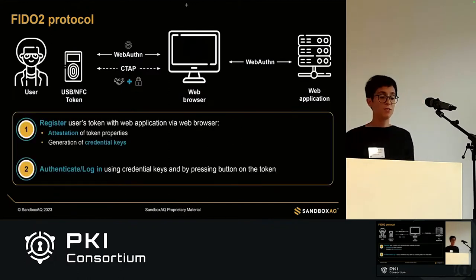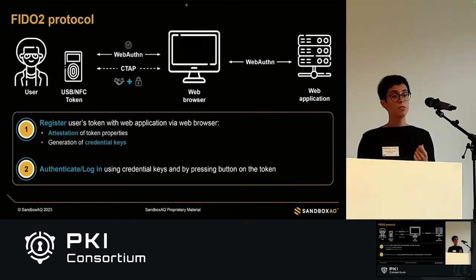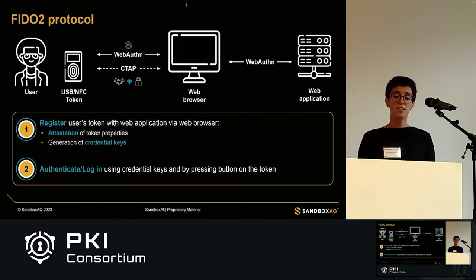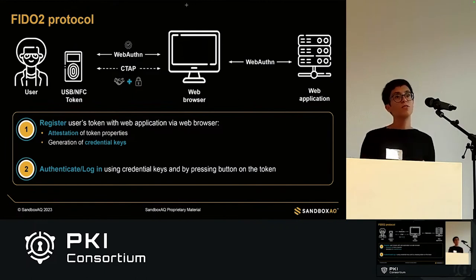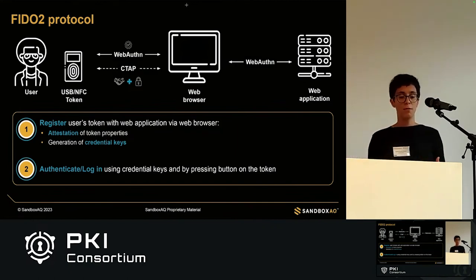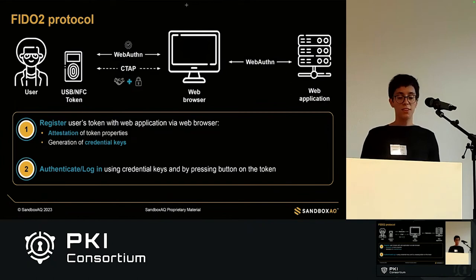The protocol has two phases. In the first phase, the user registers their hardware token to authenticate with the web application, so that in subsequent iterations they can use it to log in. In the registration phase, two processes occur. First, there is an attestation of the token properties — the token provides the web application information about its characteristics, such as security features, brand, and model, so the server can decide if it's a valid hardware token. Second, a set of credential keys are generated and registered in the web server for later authentication.